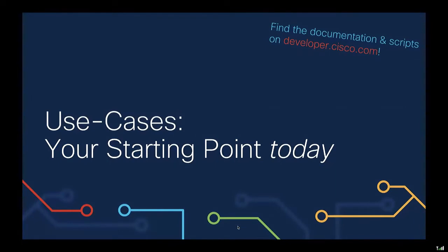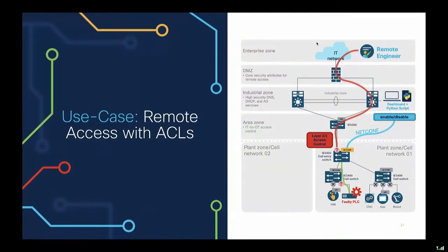Let's get started with the use cases — this is your starting point today. You can find the use cases and documentation on developer.cisco.com. I've created some learning labs and scripts on GitHub, so please check them out. The first use case is a classic one: remote access with ACLs. It may be half of the solution since you'll also need firewalls, but these use cases should give you a trigger or starting point of what is possible.